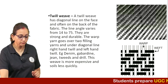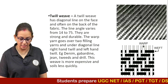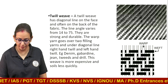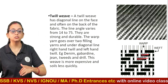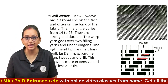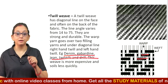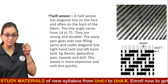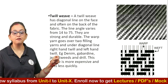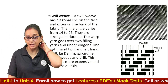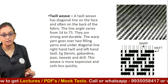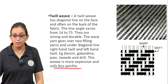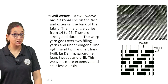Twill weaves are very durable fabrics. The warp yarn goes over two filling yarns to form a diagonal line. Examples of twill weave — you should remember this — are denim, gabardine, jeans, tweeds, and drill. The jeans that you wear, if you look at them properly, will have a twill weave. This weave is very expensive and it soils less.